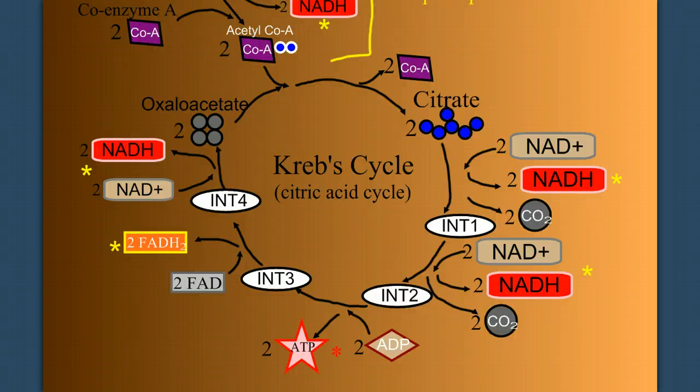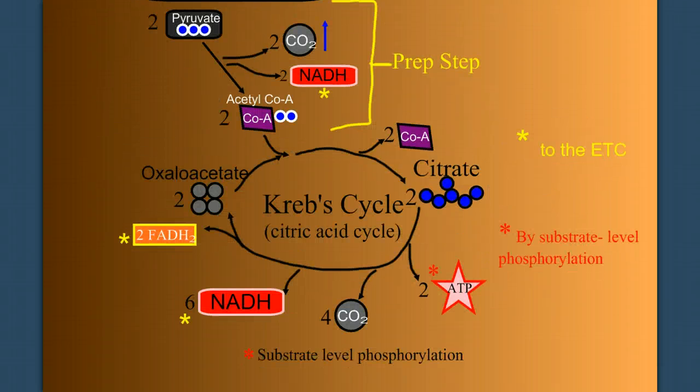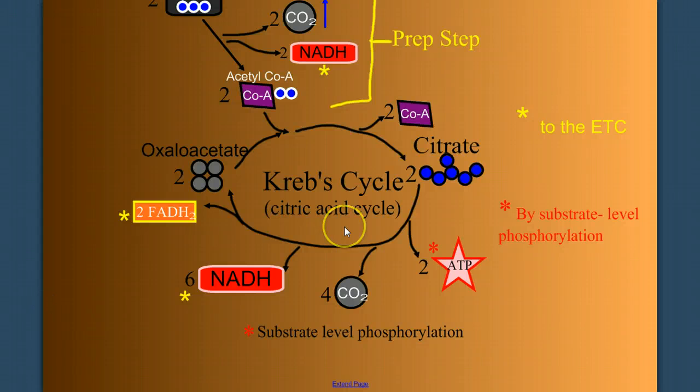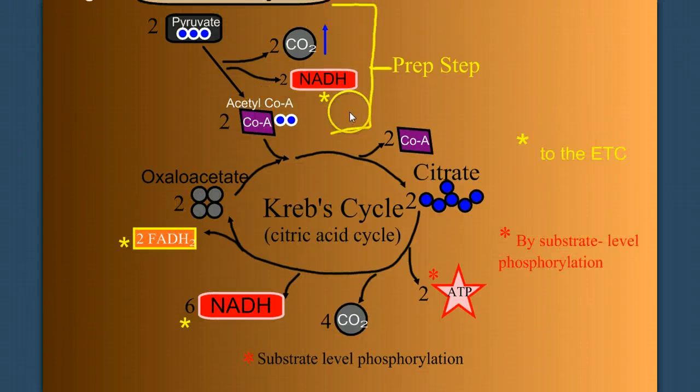Now, we can kind of summarize this in a little simpler form. This may be easier if we look at it in sum total. In the prep step, we're making two carbon dioxide waste product and two NADH, which are going to go to the electron transport chain.